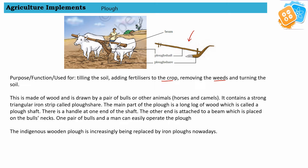The plow is made up of wood and drawn by a pair of bulls or animals, as we can see it has been tied along with the pair of bulls. It contains a strong triangular iron strip called plow share. As we can see, this triangular iron part goes inside the land and turns the soil upside down.